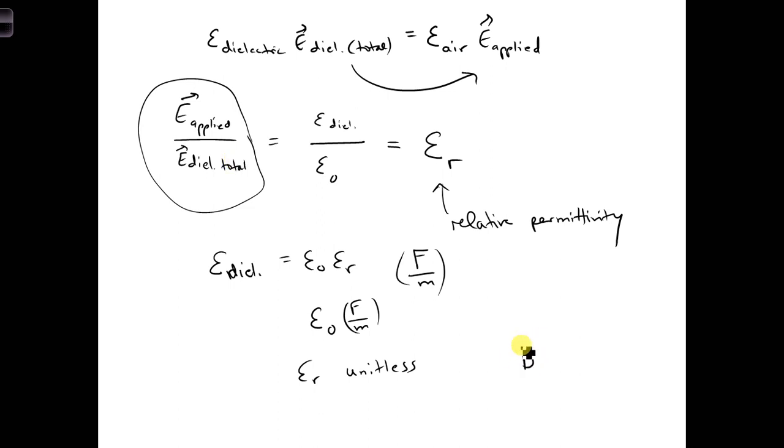More generally, looking at the constitutive relation, we had epsilon written here. D is equal to epsilon E. Now we can be more specific and write epsilon naught times epsilon r times E. In free space, epsilon r would just be 1.